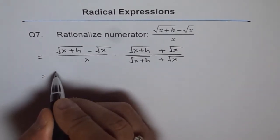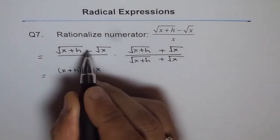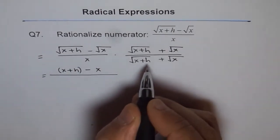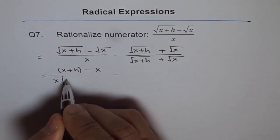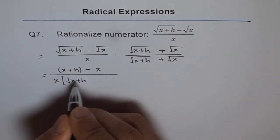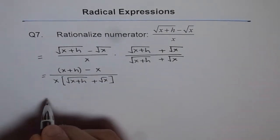So we get x plus h minus x in the numerator and in the denominator, we get x times, let me write this in brackets, square root of x plus h plus square root of x.